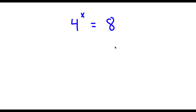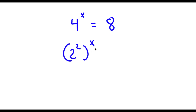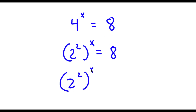Alright, so I have 4 to the power of x is equal to 8. To solve this problem, first off, 4 is the same thing as 2 squared. So now I have 2 squared to the power of x is equal to 8. Now 8 is the same thing as 2 to the power of 3. So now I have 2 squared to the power of x is equal to 2 to the power of 3.